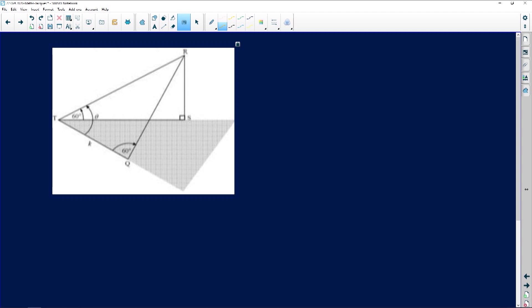They say here in the diagram RS, now RS is this thing over here, is a vertical tower, hence that 90 degrees. RS is the height of a vertical tower. T and Q are two points in the same horizontal plane as the foot of the tower. So this is lying on the ground, T and Q are both lying in the same horizontal plane.